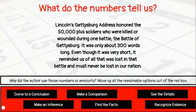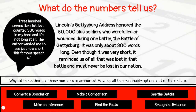Now that we have highlighted the numbers, consider this question: why did the author use those numbers or amounts? Here are some examples of the types of thoughts we should have when looking at these numbers. '300 seems like a lot, but I counted 300 words in a book and it's not that long at all. The author wanted me to see how short this famous speech was.' Now stop and think about another strategy that a writer might use to help them consider the options in the red box.